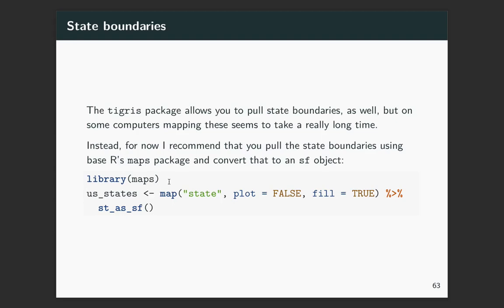So the maps package has been around with R for quite a long time, and it includes some different functions for geographical data in R. You can run map from that package with state to get state boundaries. And if you want to get the data rather than immediately creating the plot, you can put plot equals false and fill equals true. This will create a data set of those state boundaries. And then to convert it into an SF type object for this specific one, you can just use ST_as_SF.